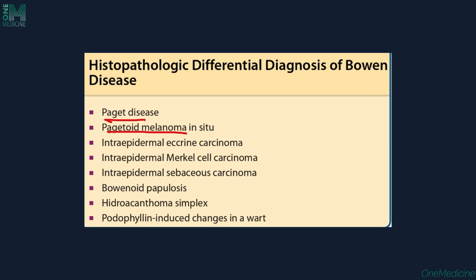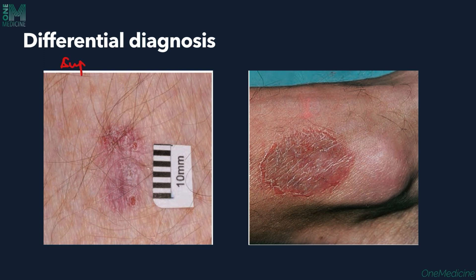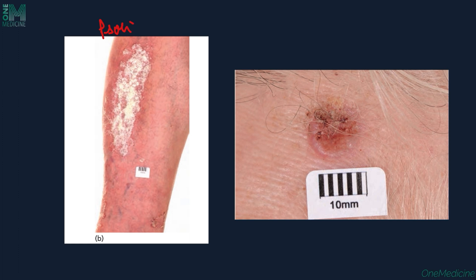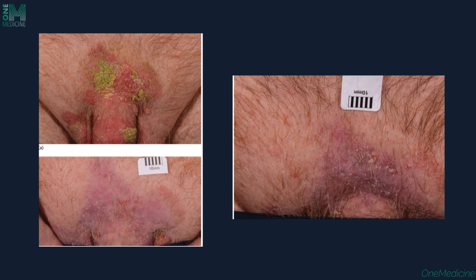Histopathologically, Bowen's disease must be differentiated from Paget's disease — because pagetoid cells (large keratinocytes with pale cytoplasm) are present — intraepidermal eccrine carcinoma, intraepidermal Merkel cell carcinoma, intraepidermal sebaceous carcinoma, bowenoid papulosis, hidradenoma simplex, and porofillin-inducing disorders. Illustrative images show superficial basal cell carcinoma, discoid eczema, psoriasis with scaling, and squamous cell carcinoma with hyperkeratosis — all mimicking Bowen's disease.